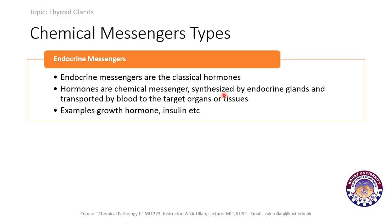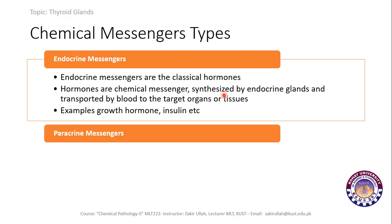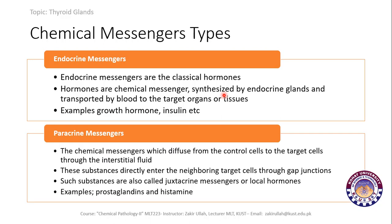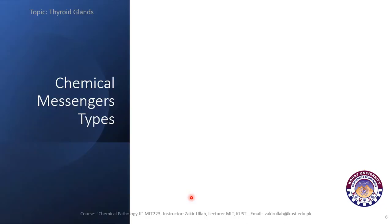Examples of endocrine messengers include growth hormone, insulin, and thyroid stimulating hormone. The paracrine messengers are chemical messengers which diffuse from control cells to target cells through interstitial fluid, entering neighboring target cells through gap junctions. These are also called juxtacrine messengers or local hormones, and examples include prostaglandins, histamines, and cytokines.